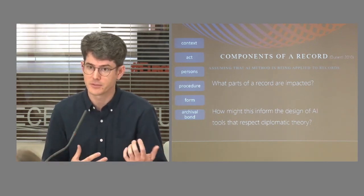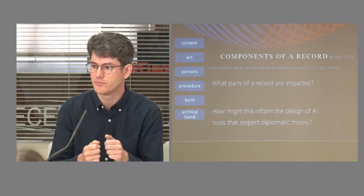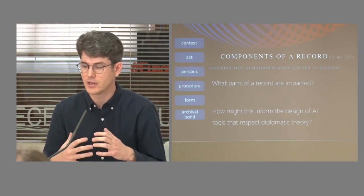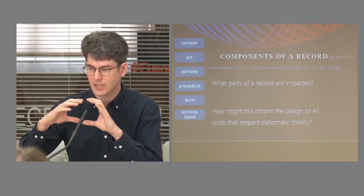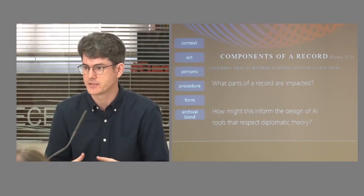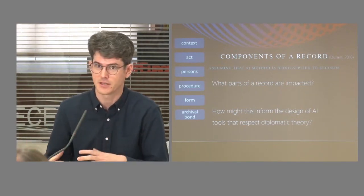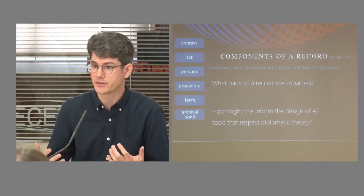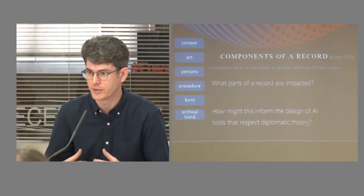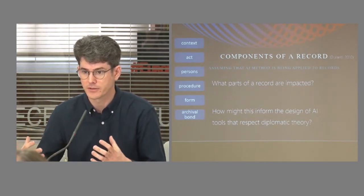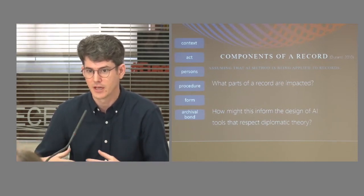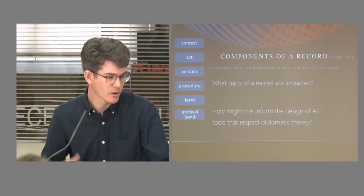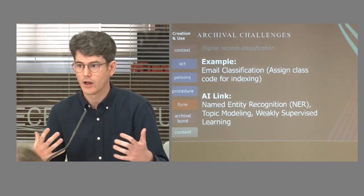Procedure may be less relevant in evaluating AI but could provide context as to how records come about and are employed. Form involves the many different components of a record and how it's written — both intrinsic elements such as the text of the document and extrinsic elements like the medium it's been written on, whether that's a digital file or parchment. Finally, the most important concept is archival bond, which tells us how different records are related to each other, to other records in a series, and to other records in the fonds.